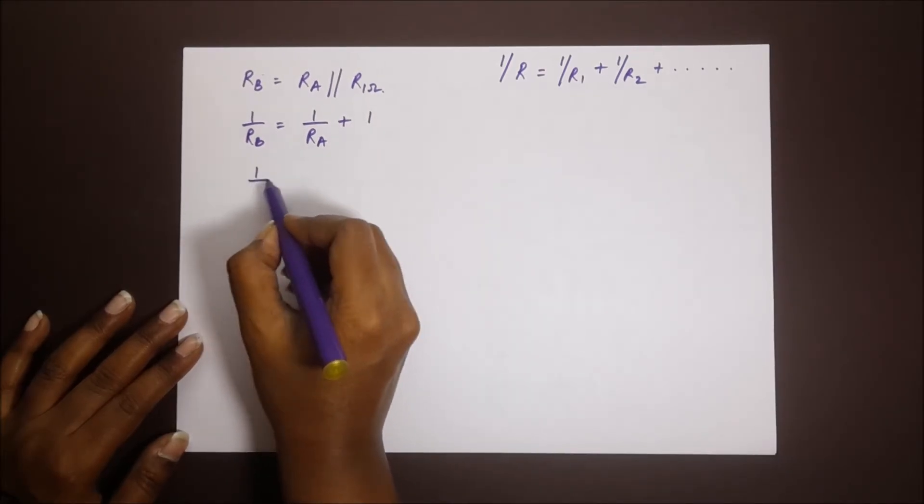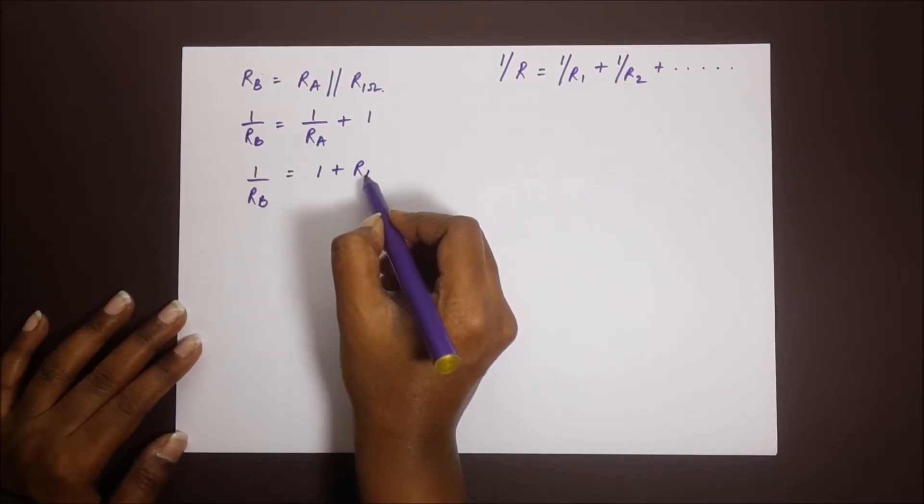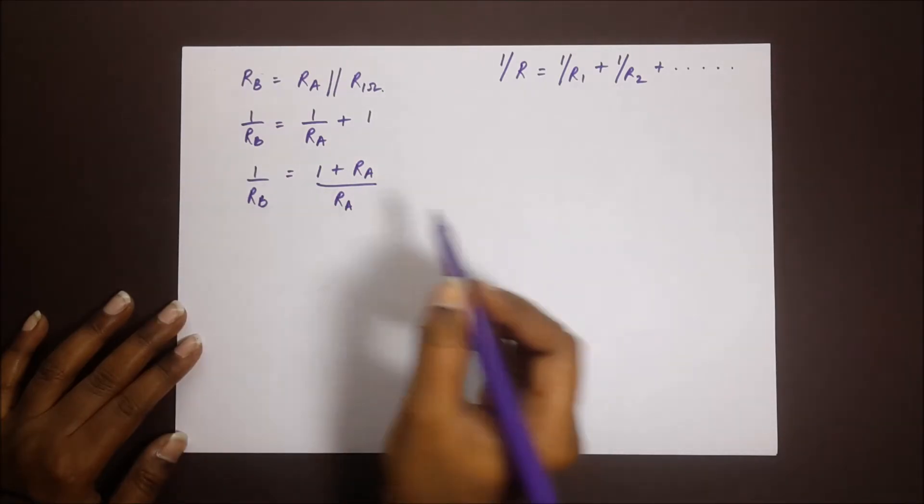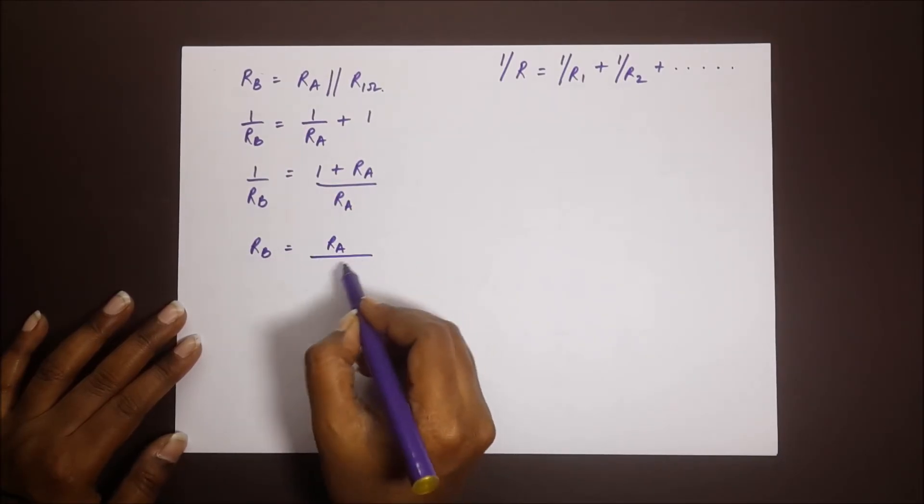So we solve this one by RB is equal to one plus RA by RA. We flip it over, reciprocal, RB equals RA by one plus RA.